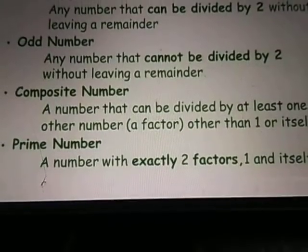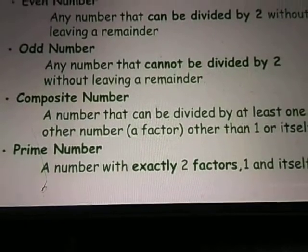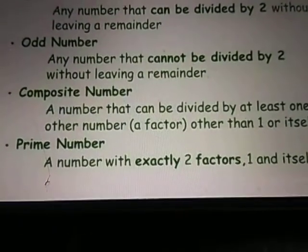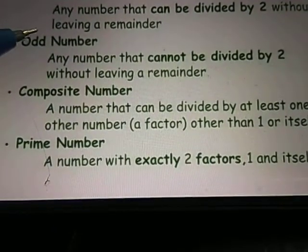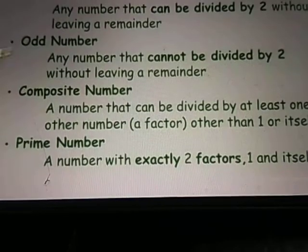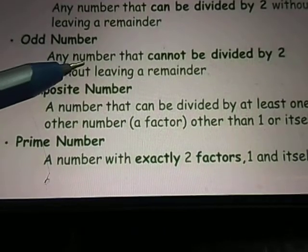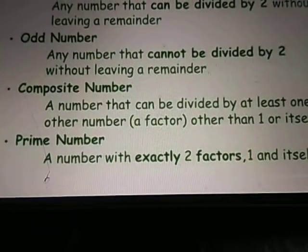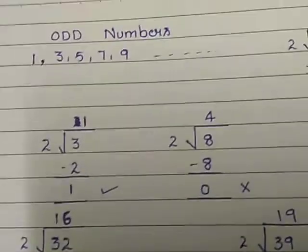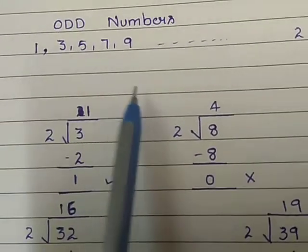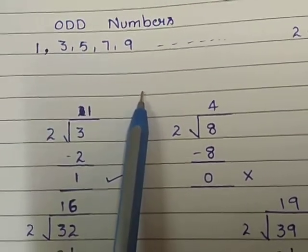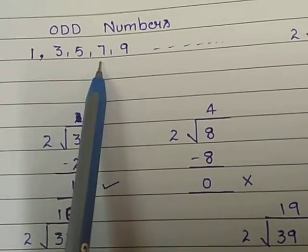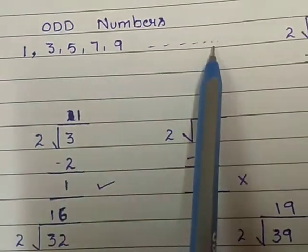The next type is odd numbers. What are odd numbers? Any number that cannot be divided by 2 without leaving a remainder — that is, numbers which are not divisible by 2. The odd numbers are 1, 3, 5, 7, 9 and so on.